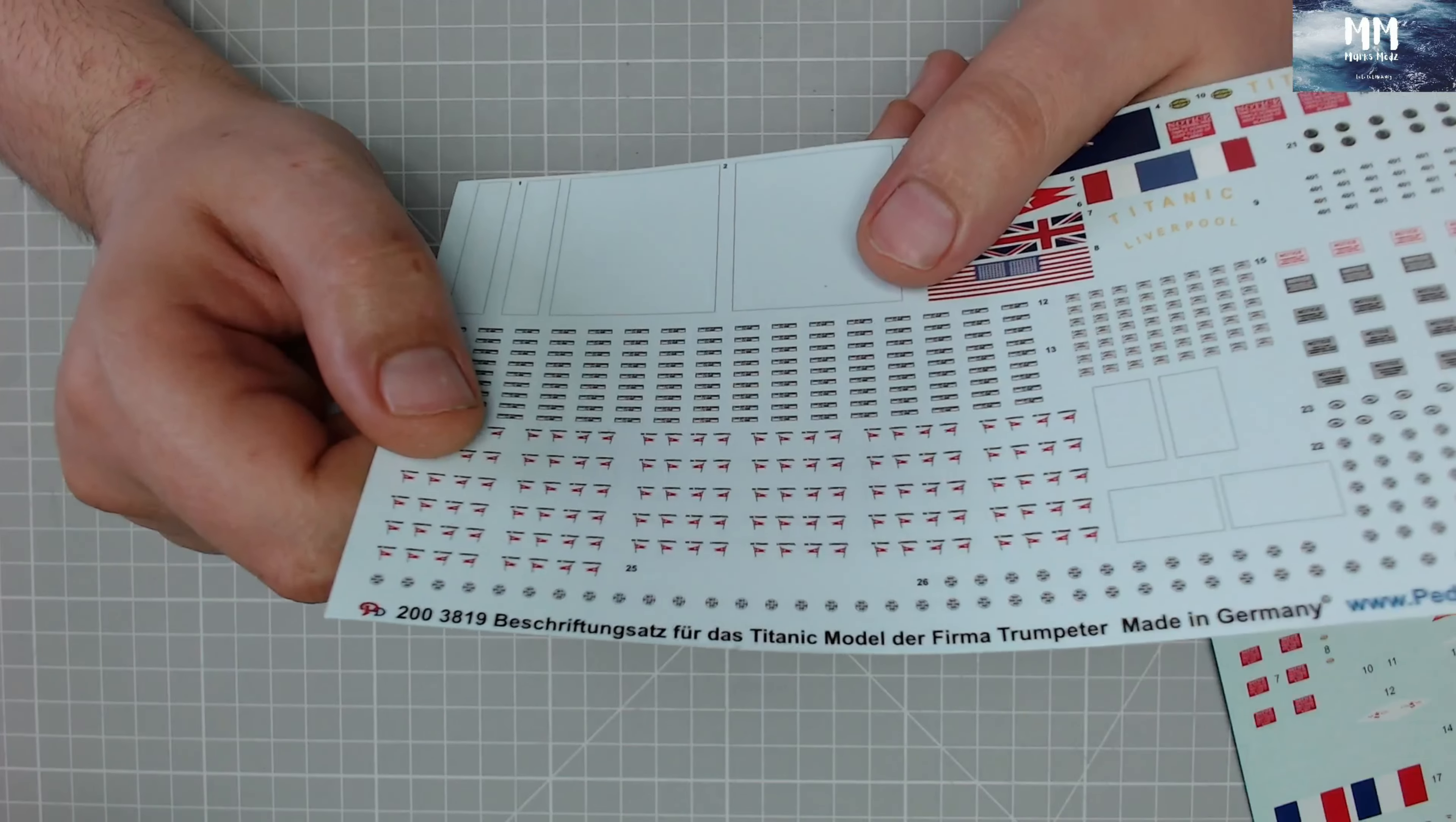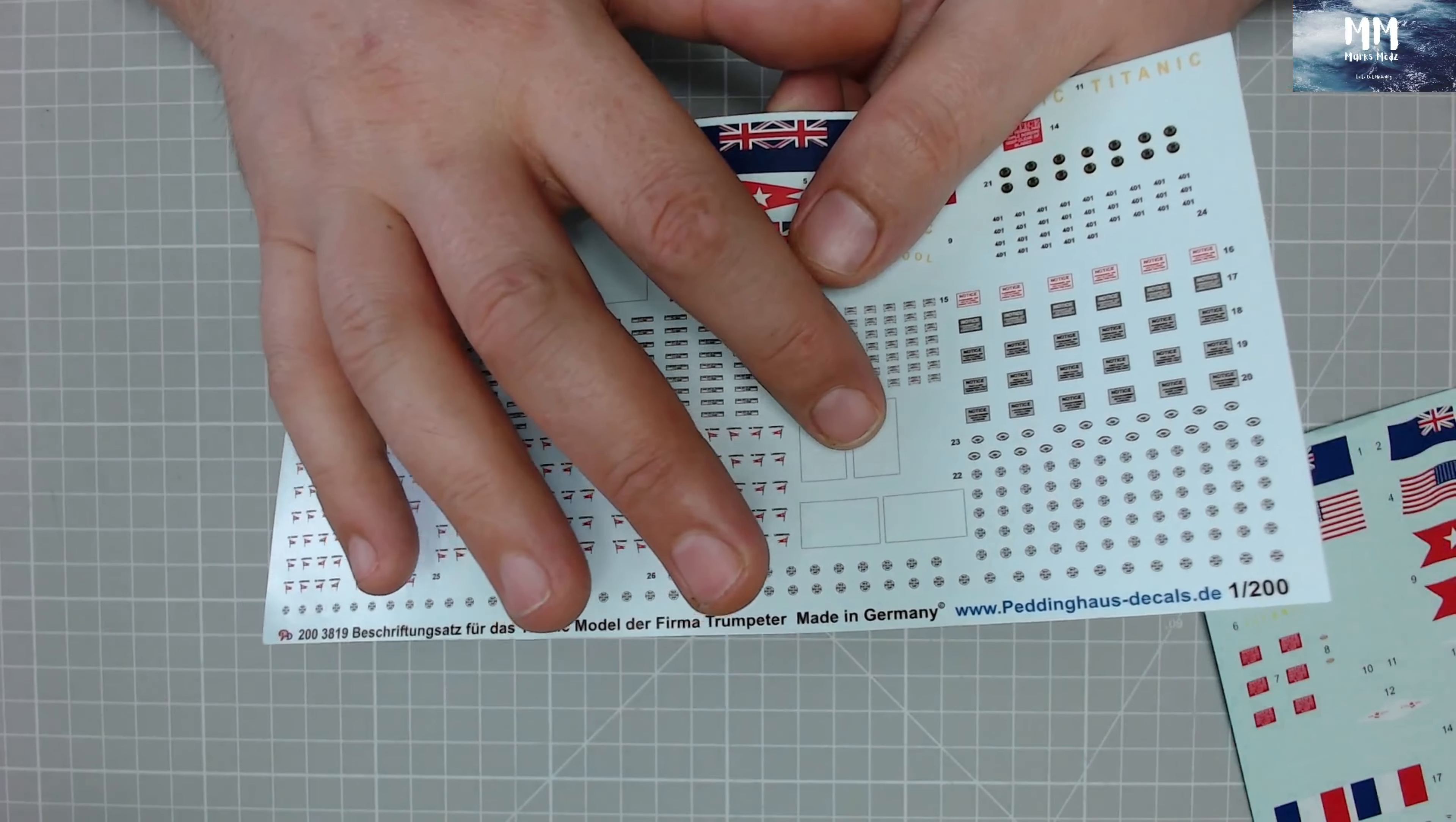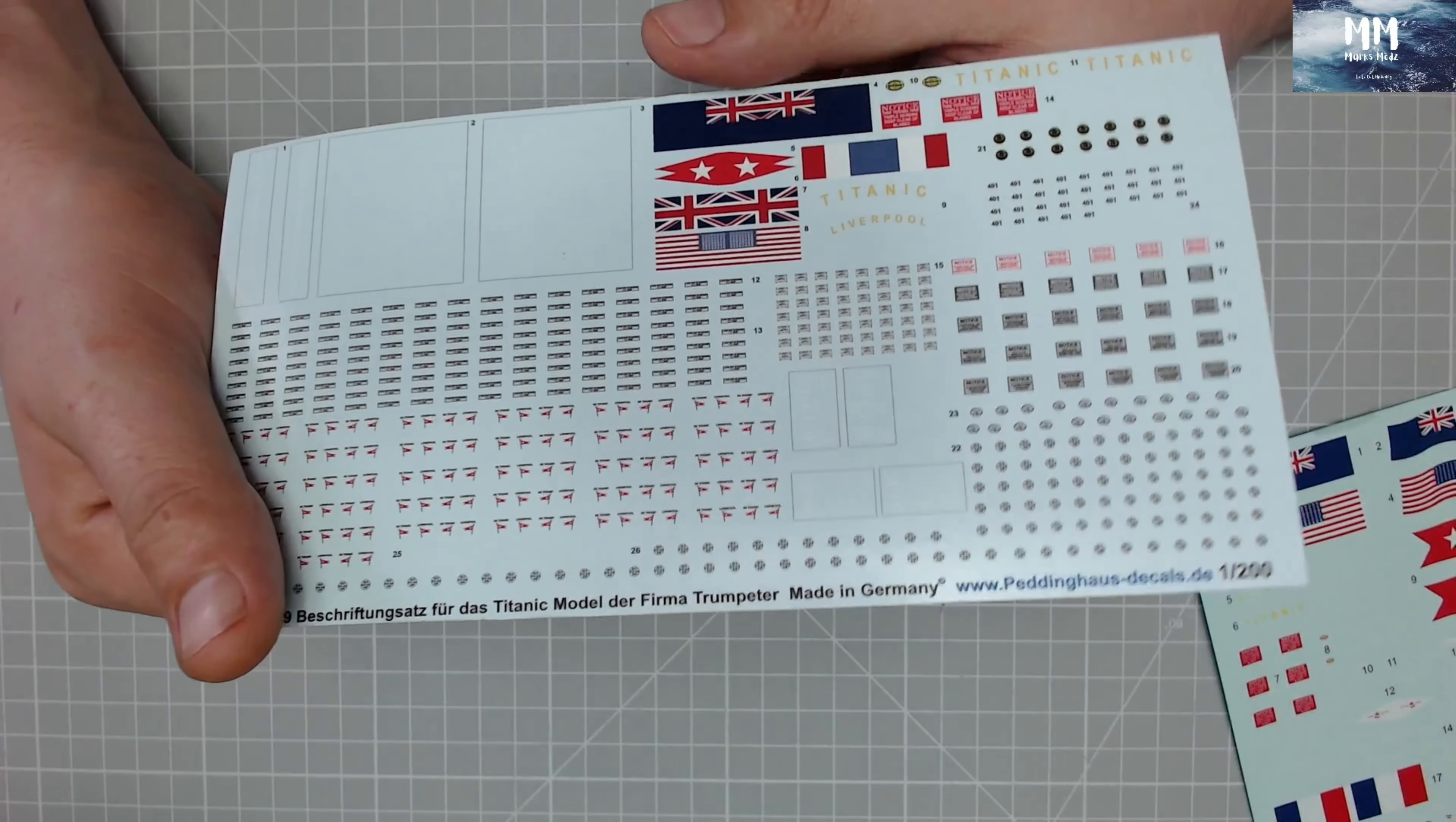Like the other sheet, we do have the lettering for the boat. So you've got the white starline flag and everything on there. And in here, this is something that's quite unique, is we do have some bits for the bridge, some decals that will go there on the bridge. So you can see just how detailed this sheet is. I mean, I could talk all day about it.